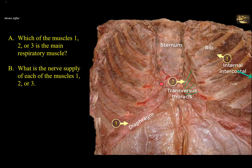These three muscles all contribute to respiratory movement, but the diaphragm is the main respiratory muscle. Regarding nerve supply: the intercostal muscles — whether external, internal (number 1), or innermost — including the transversus thoracis (number 2), are segmentally supplied by intercostal nerves. The diaphragm (number 3) is supplied by the phrenic nerve.